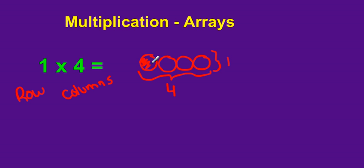If I were going to add these, I would have 1, 2, 3, 4, which tells me that 1 times 4 equals 4.